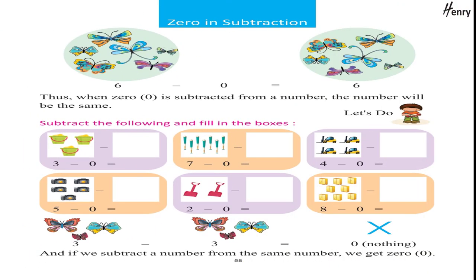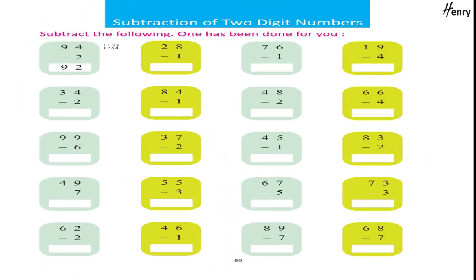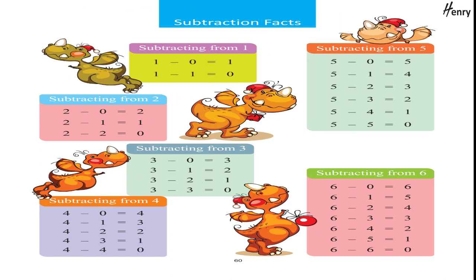Zero in subtraction. Six minus zero equals six. Thus, when zero is subtracted from a number, the number will be the same. Let's do: subtract the following and fill in the boxes. And if we subtract a number from the same number, we get zero. Subtraction of two-digit numbers: subtract the following — one has been done for you. Subtraction facts.